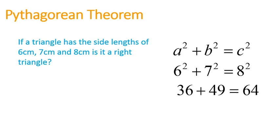6 squared is 36. 7 squared is 49. 8 squared is 64. And they don't add up. The left side is equal to 85. The right side is 64. Therefore, this is not a right-angle triangle. It doesn't work. That often will happen.